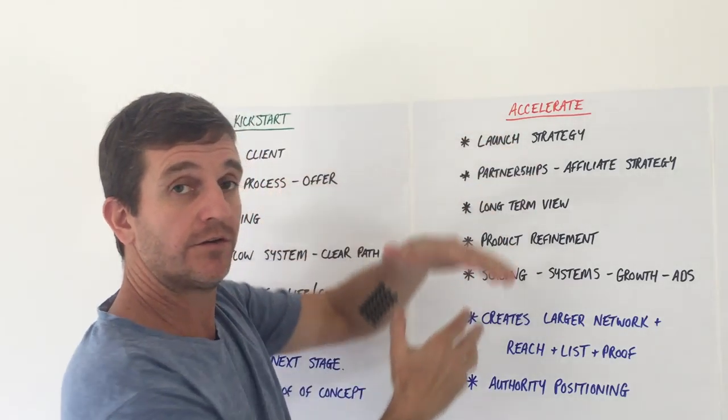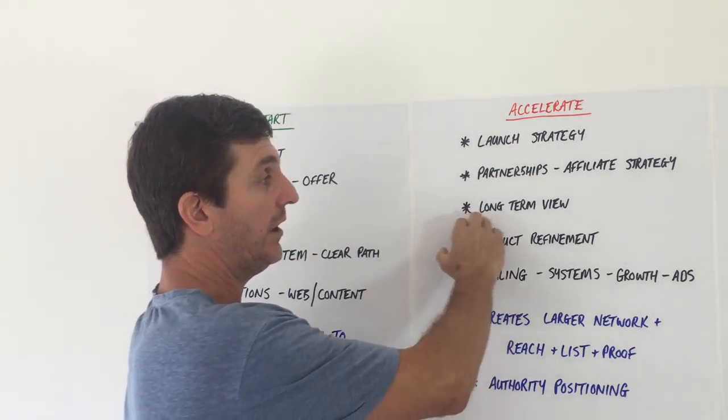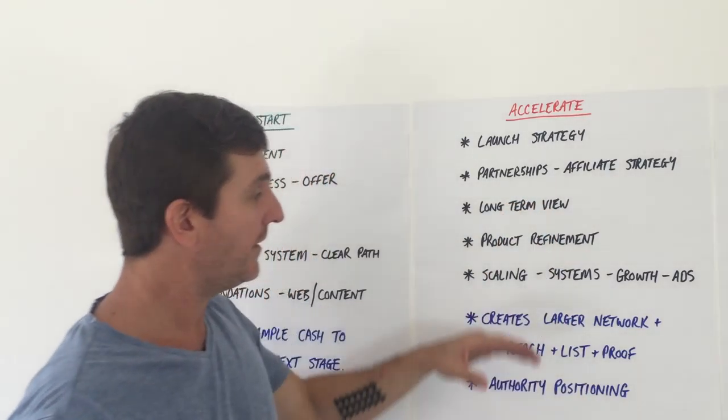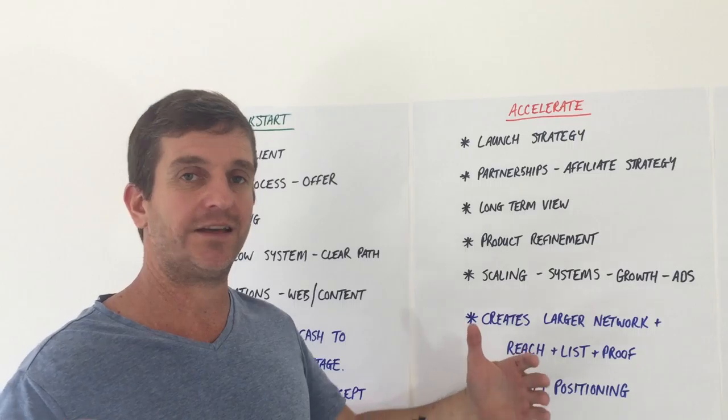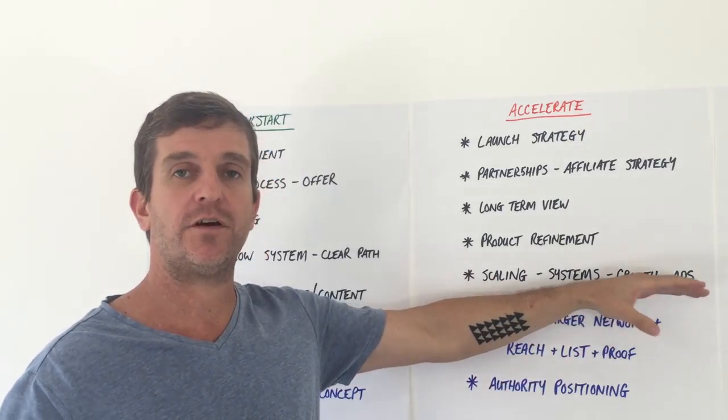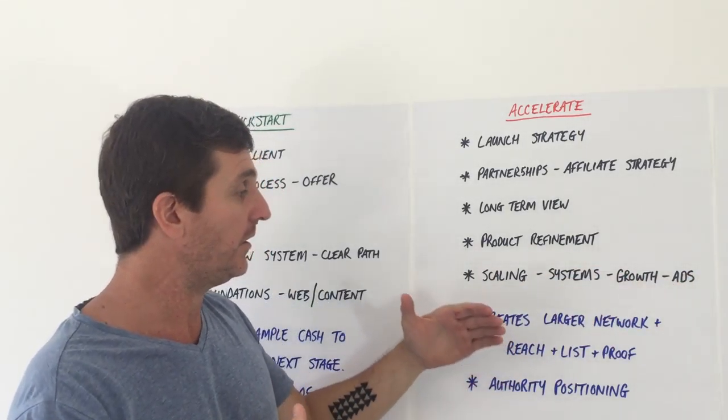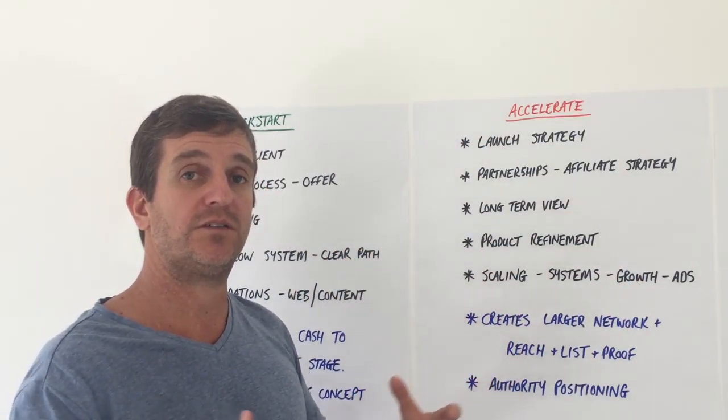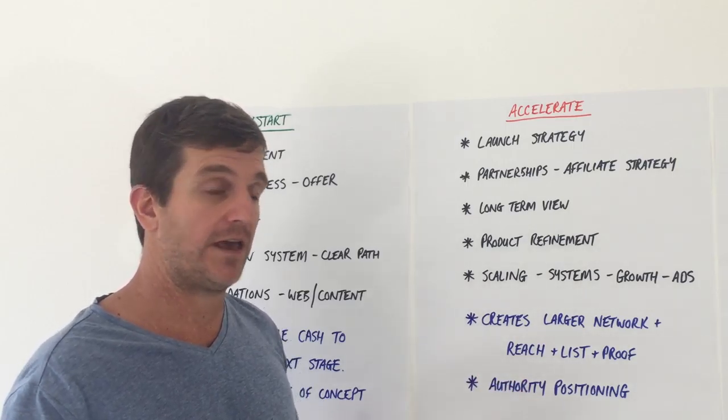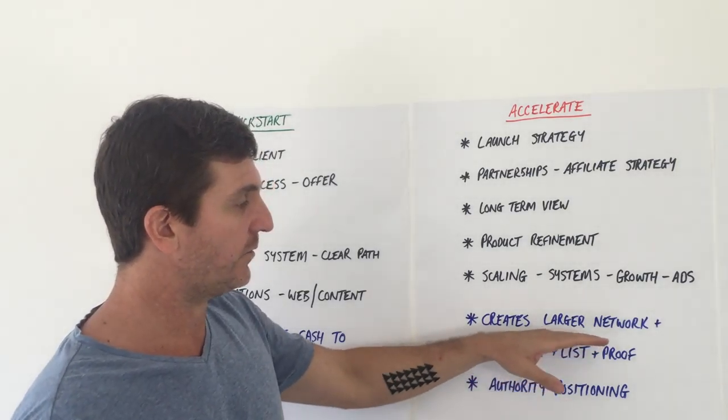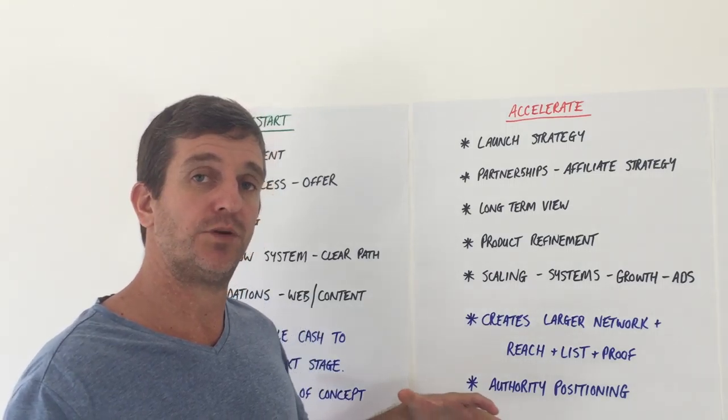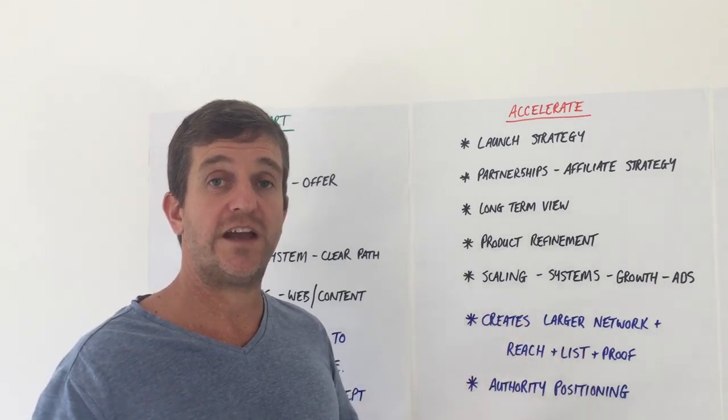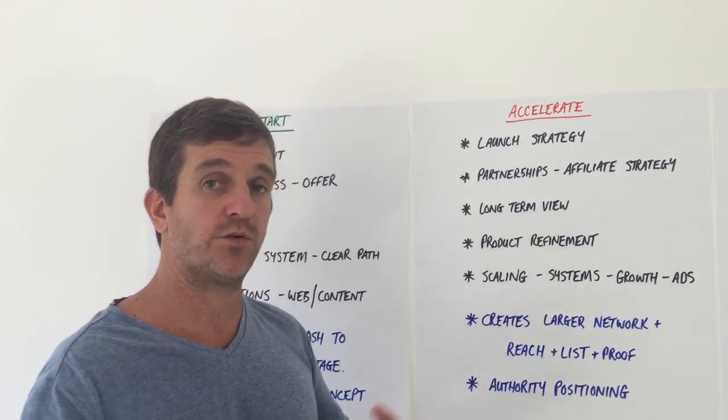So that once they have the foundation, they're able to move into a launch kind of strategy with a long-term view. This is where we get to refine their product, we get systems in place that allow scaling and growth - whether that be advertising or other mediums. Lots of different things there to try. But this Accelerate phase is all about accelerating the business, growing big lists, creating raving fans. This also builds a much larger network, much larger reach for the client, and again builds the list, creates more and more proof for them, proof of product.